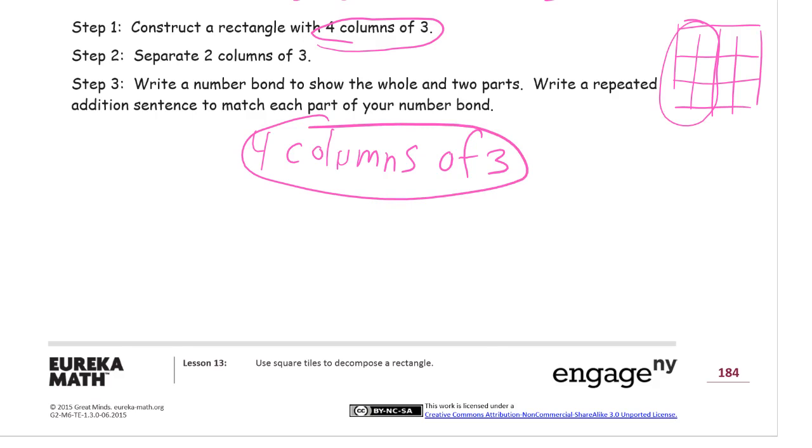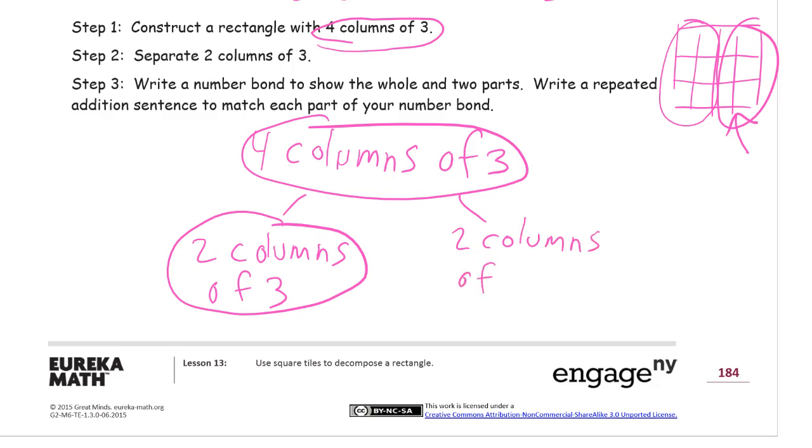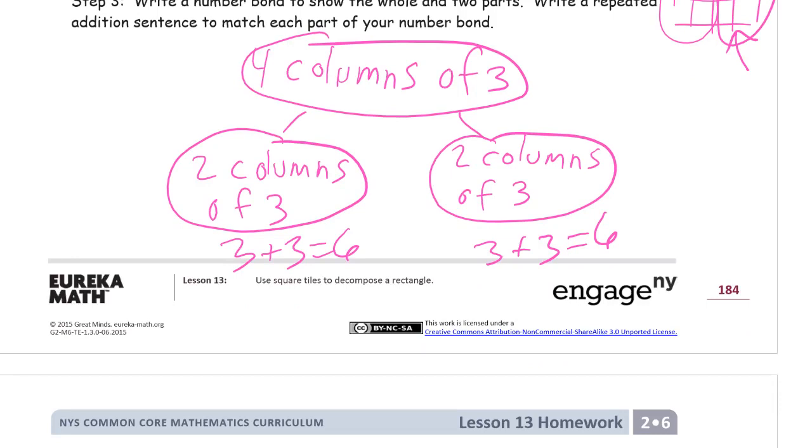And then your parts are 2 columns of 3. And the rest of it here is 2 other columns of 3. So 2 columns of 3 is 2 3's. And there we go. There's repeated addition sentences to match the parts of the number bond.